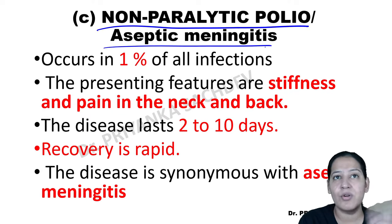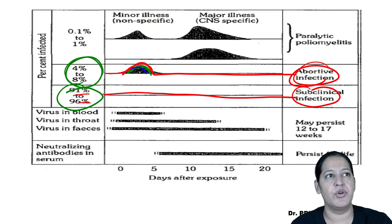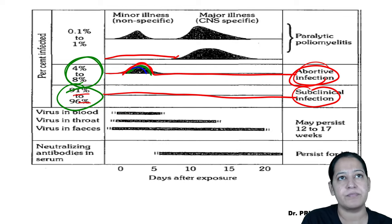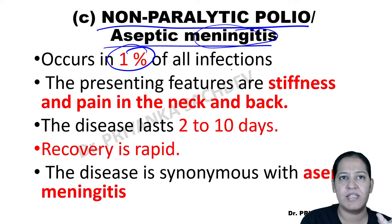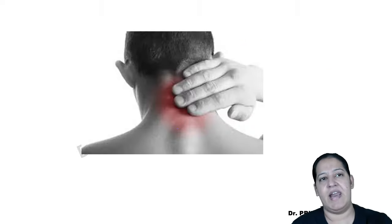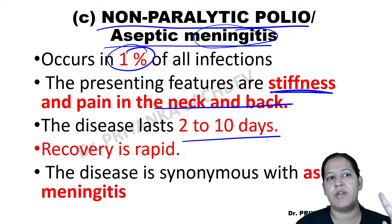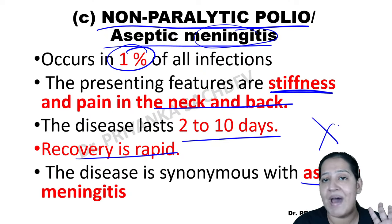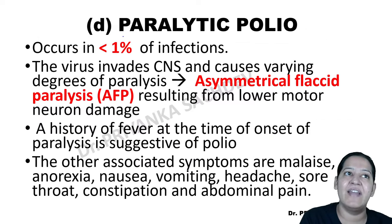Third scenario: non-paralytic polio, also known as aseptic meningitis — 1% of cases. The patient has stiffness and pain in the neck due to viral meningitis. The disease lasts two to ten days and recovery occurs. There is still no paralysis.